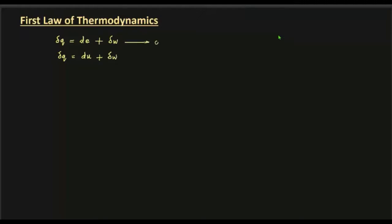The first equation is for an open system or control volume undergoing a process, and the second is applicable for a closed system. If a question mentions a gas enclosed in a rigid sealed cylinder, that is a closed system where there is no mass transfer. We used the open system equation for obtaining the steady flow energy equation.